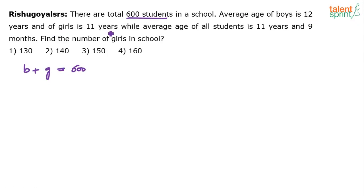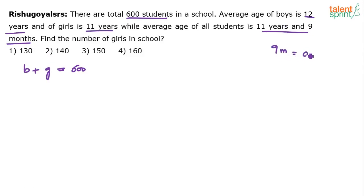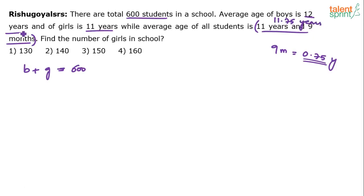Average age of boys is 12 years and of girls is 11 years, while the average age of all students is 11 years and 9 months. One important part of the solution is how to convert 11 years and 9 months to years — you have to balance the units. 9 months equals 0.75 of a year, i.e., three-fourths of a year.